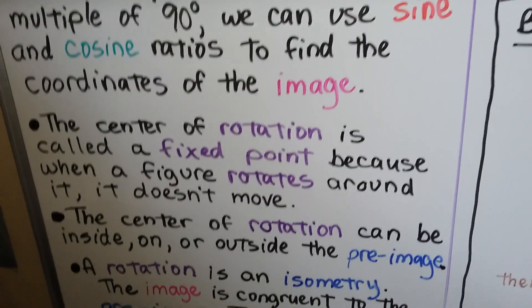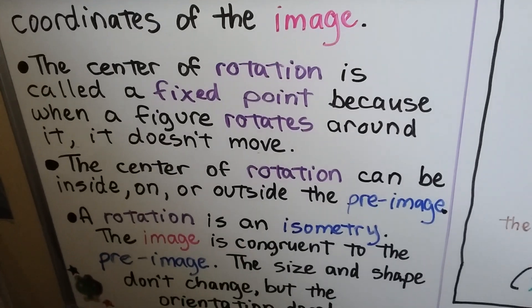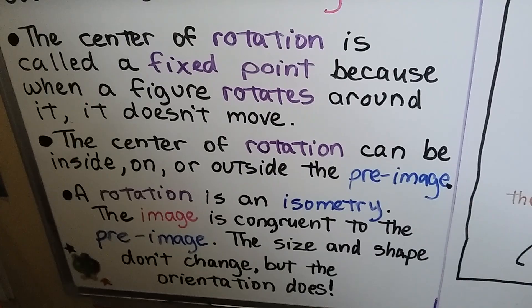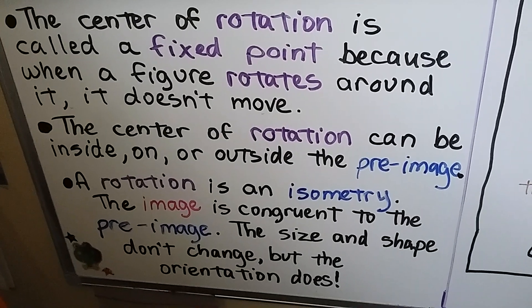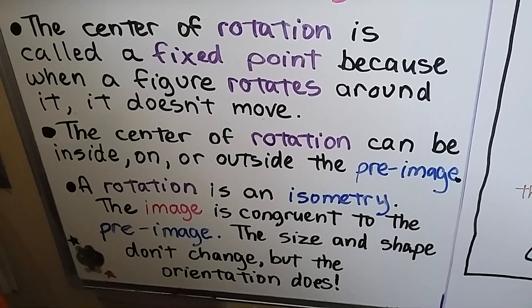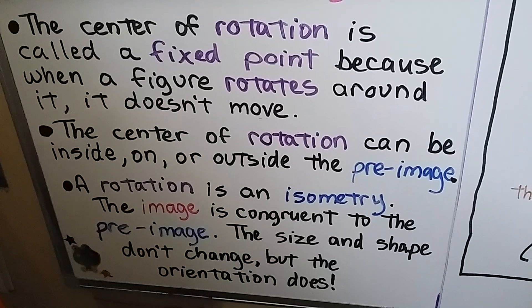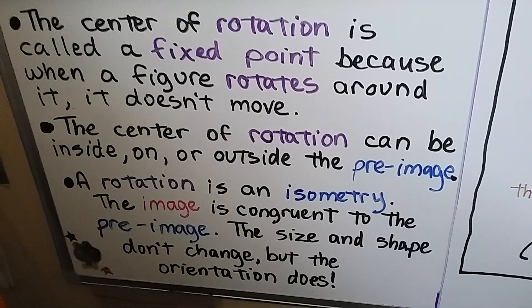The center of rotation can be inside, on, or outside the preimage. And a rotation is an isometry. The image is congruent to the preimage. The size and shape don't change, but the orientation does.